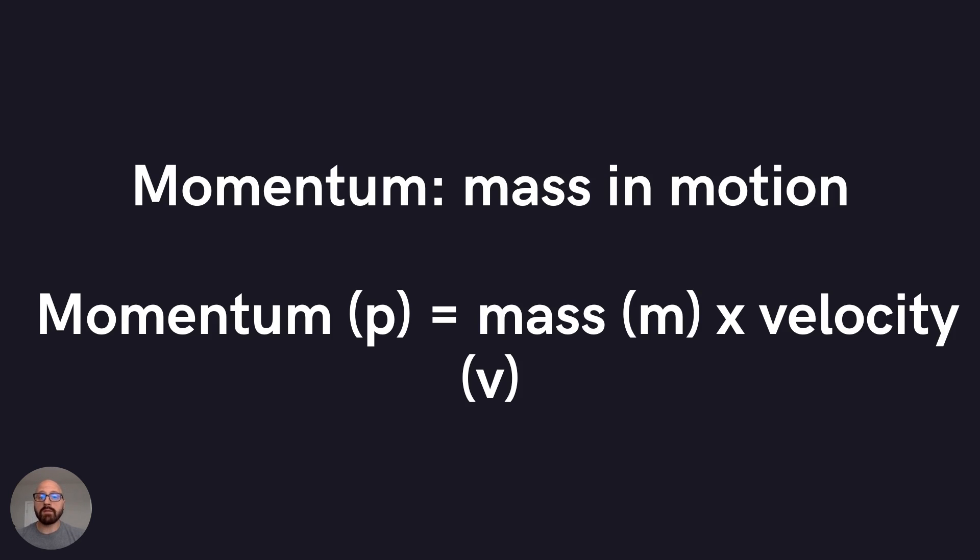Momentum is simply mass in motion. It's mass times velocity. How fast is that thing going in that direction? All objects have mass. And if an object is moving, it has momentum. The amount of momentum is going to depend on how much mass and how fast it's moving.